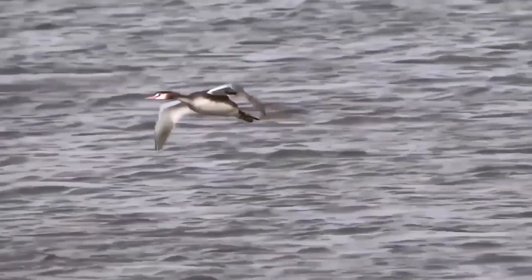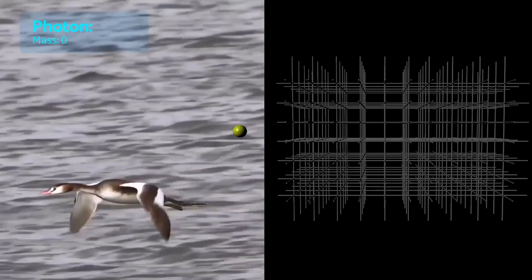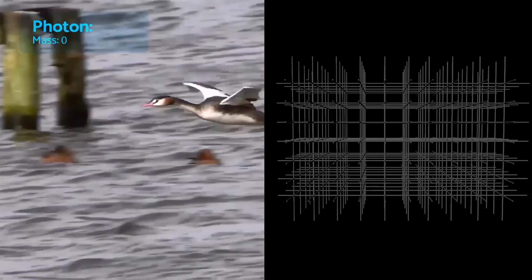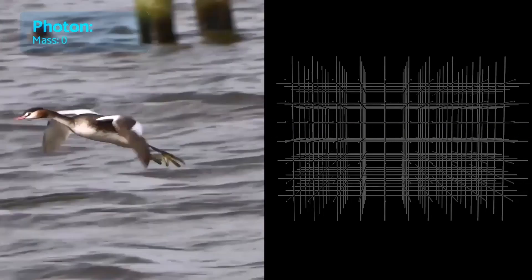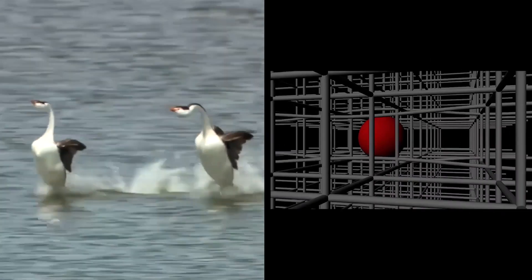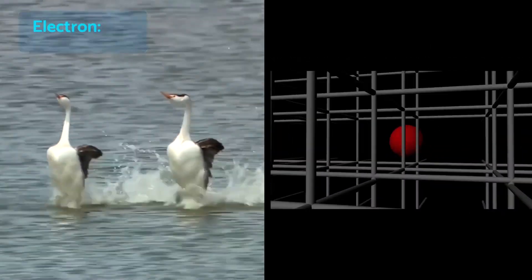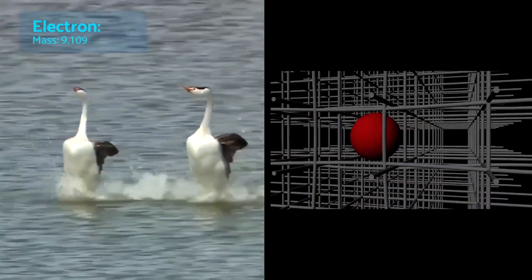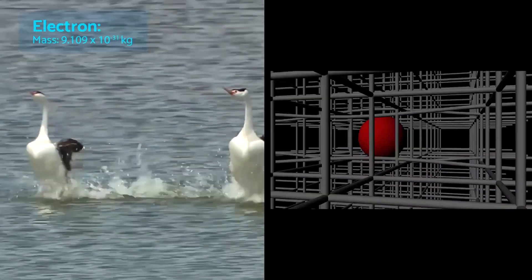When it flies, it's like a photon. Photons do not interact with the Higgs field, hence they have zero mass and travel at the speed of light. When it walks, it's like an electron. Electrons have minuscule mass because they interact less with the Higgs field.